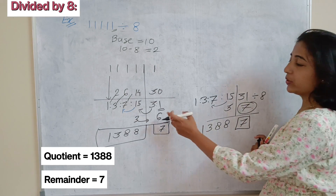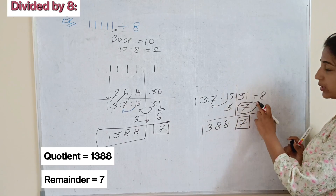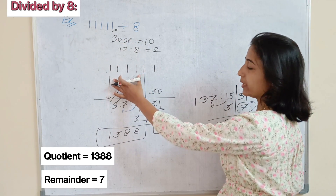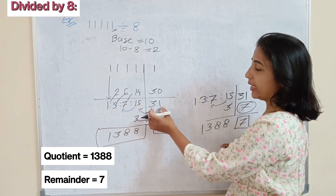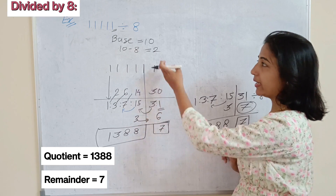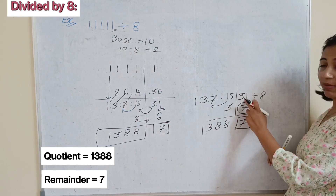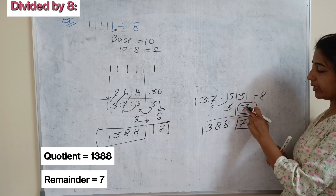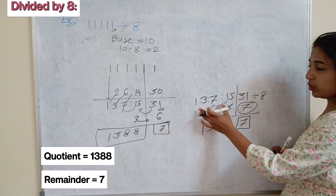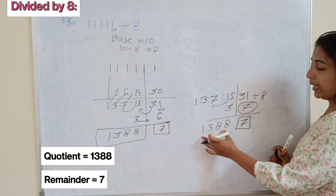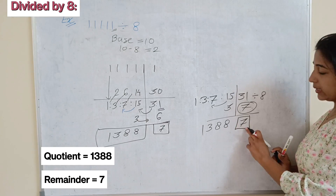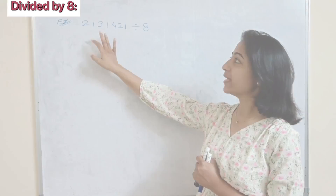Instead of breaking that number, you can also apply this process directly. Because here 11111 is a bigger number, direct division is difficult. But applying this Vedic Maths trick reduces the number to just 2 digits, and dividing a 2-digit number by 8 is easy. The final quotient is 1388 and the remainder is 7.